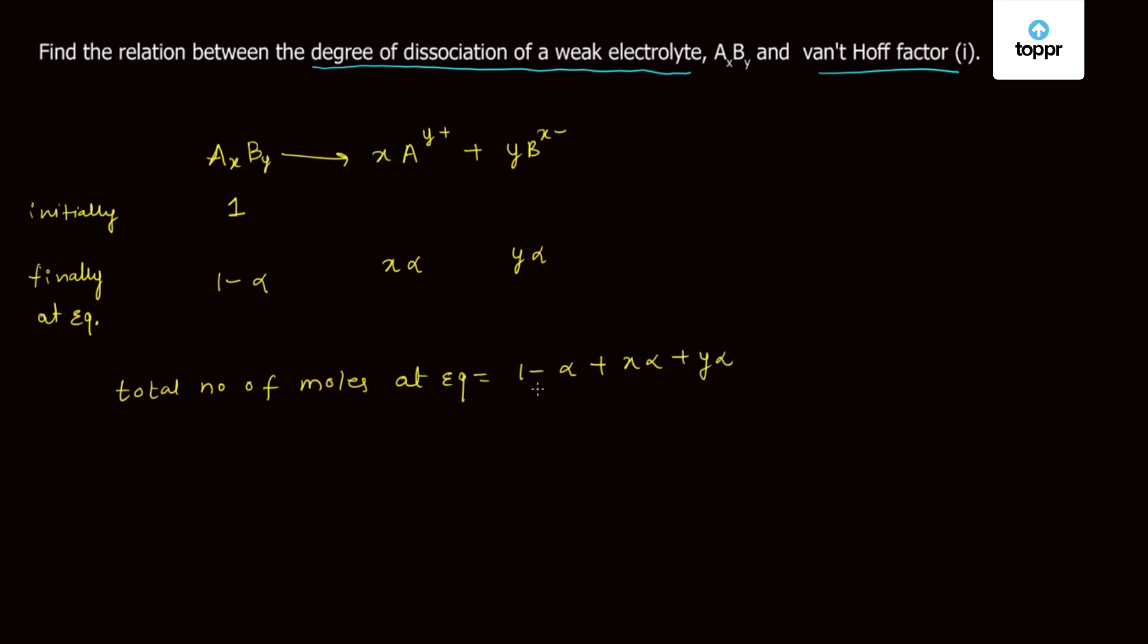As we know, van't Hoff factor i is equal to total number of discrete ions at equilibrium, which is 1 minus alpha plus x alpha plus y alpha.